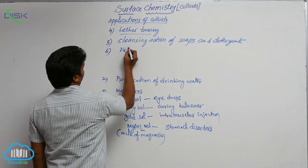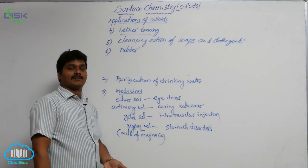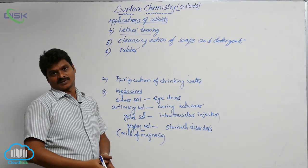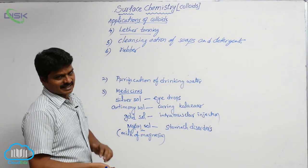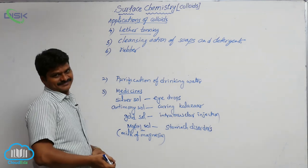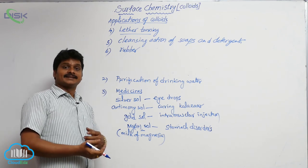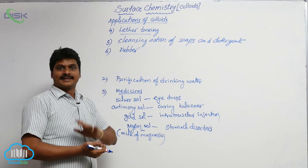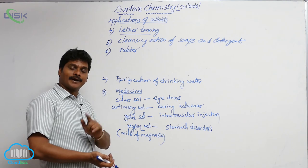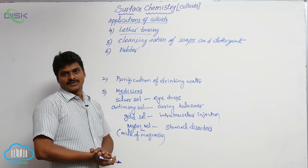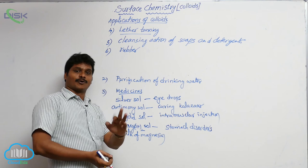The sixth application is rubber. Rubber is obtained from latex, a milky suspension excreted by rubber plants. Latex is a negative colloid and is a hydrosol — rubber particles are the dispersed phase and water is the dispersion medium. So latex is a solid-in-liquid type colloidal solution, and it is a negative colloidal solution.